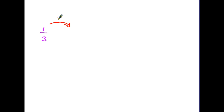Now let's look at how we work out equivalent fractions. I'm going to start with the fraction one third. Here is our rule for finding equivalents: if we multiply the top number by any number — let's say we multiply by two — then we have to multiply the bottom number by exactly the same. One times two is two, and on the bottom, three times two is six. We have found a pair of equivalent fractions: one third is the equivalent of two sixths.